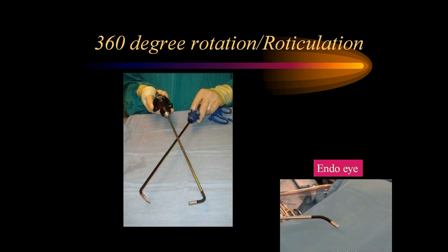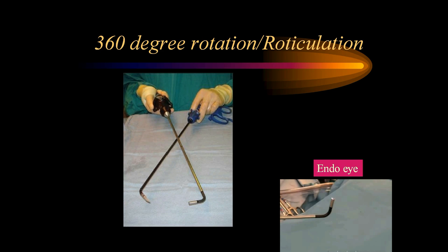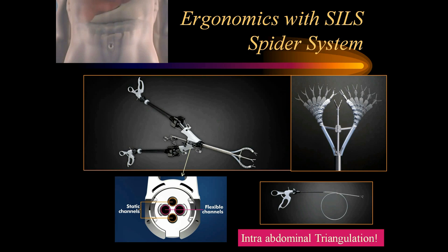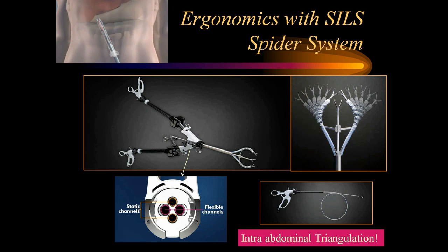As shown in this video, the endo-eye can be turned in various directions by moving a knob, allowing a panoramic 360-degree view inside the peritoneal cavity. This helps avoid sword-fighting of the equipment and hands coming close to each other when using coaxial instruments. With the SPIDER system, instruments are passed through flexible channels to achieve intra-abdominal triangulation and proceed with laparoscopic surgery as with conventional instruments.